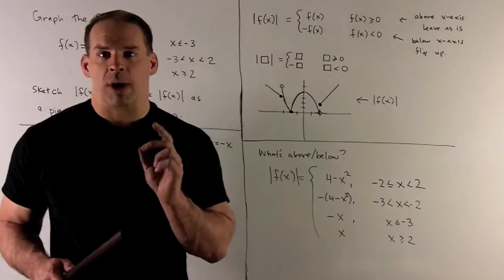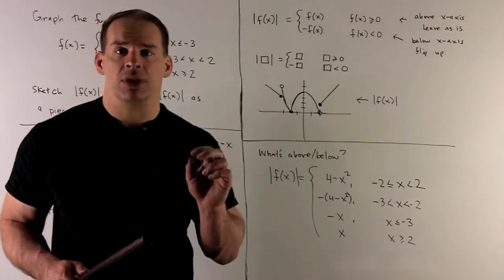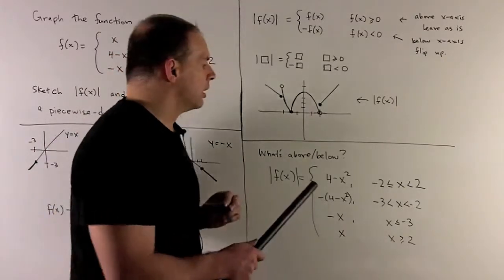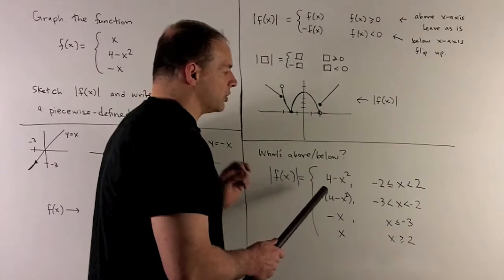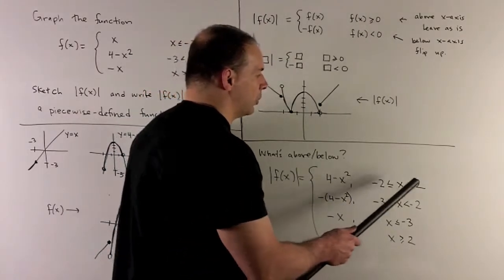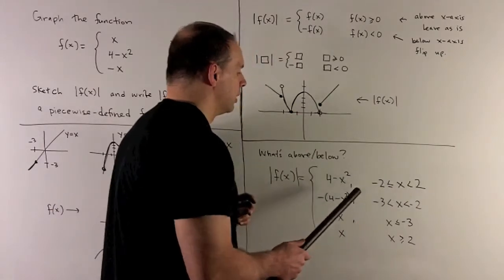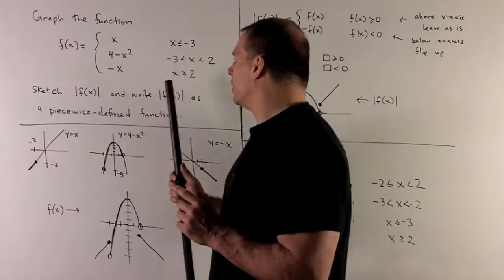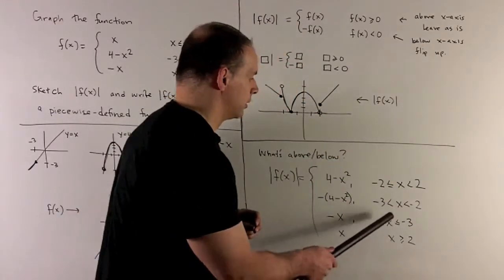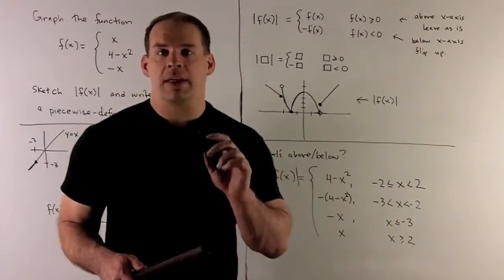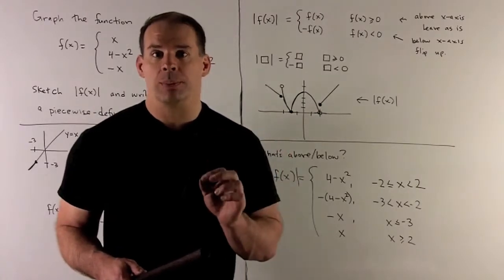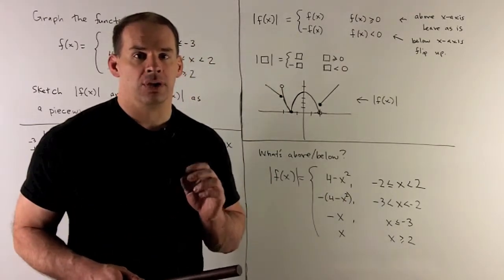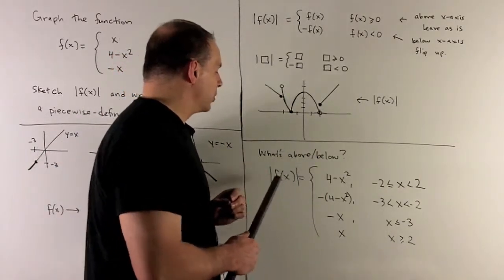Now let's write the piecewise defined function for the absolute value of f(x). The only part unchanged was the parabola between minus 2 and 2, so that piece is 4 minus x squared for minus 2 less than or equal to x less than 2. Everything else gets a sign change: for x less than or equal to minus 3, we get minus x; for x greater than or equal to 2, we get x; and for the flipped portion of the parabola between minus 3 and minus 2, we get minus(4 minus x squared), which equals x squared minus 4.